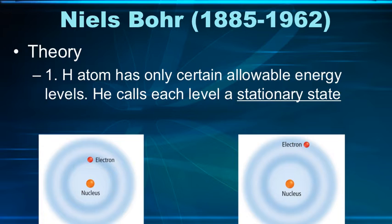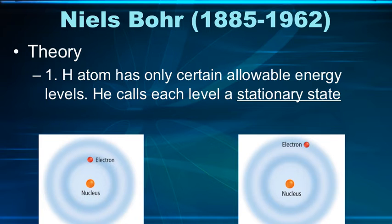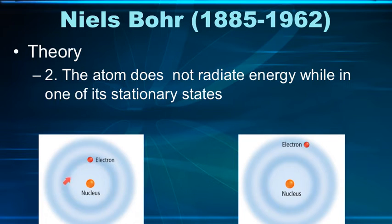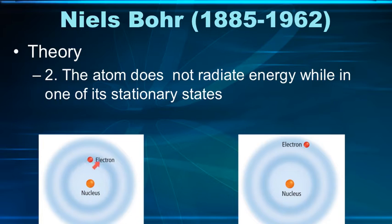Here are three parts to Bohr's theory. Part one: the hydrogen atom has only certain allowable energy levels, and he calls each level a stationary state. Where the electron can exist is at different stationary states at various distances from the nucleus — the further out, the more energy involved. This would be the ground state, as close as it can get to the nucleus, and an excited state is where we've given it energy and it has moved out. The electron stays in that stationary state until it gains or loses energy. While in that state, it does not radiate energy. When it moves back down from an excited state to the ground state, it will radiate energy.